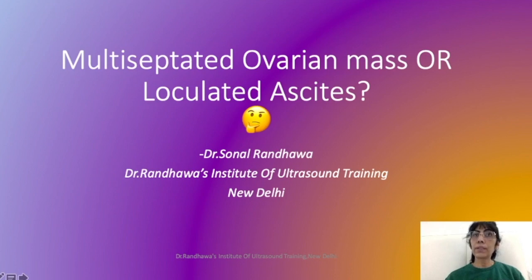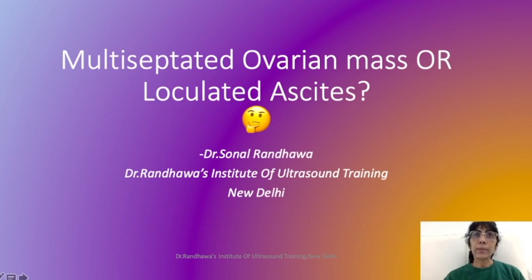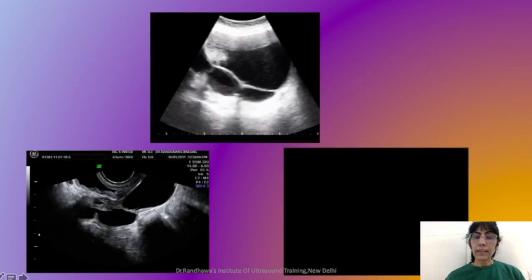Ascites is basically fluid collection in between the organs and areas. So you will find some organ trapped in it, or adhesions attaching to that organ, the septations attaching to that organ, or bowel loops floating within it. You should not make that kind of confusion. Now I'll just show you two or three videos to illustrate what I am trying to say.